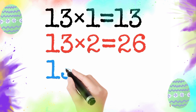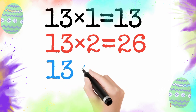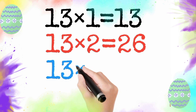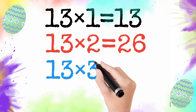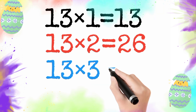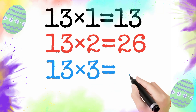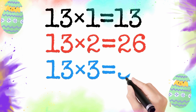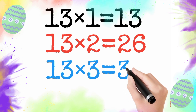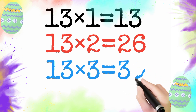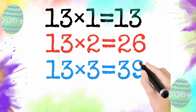13 multiply by 3 is equal to 39. So 13 times 3 is 39.